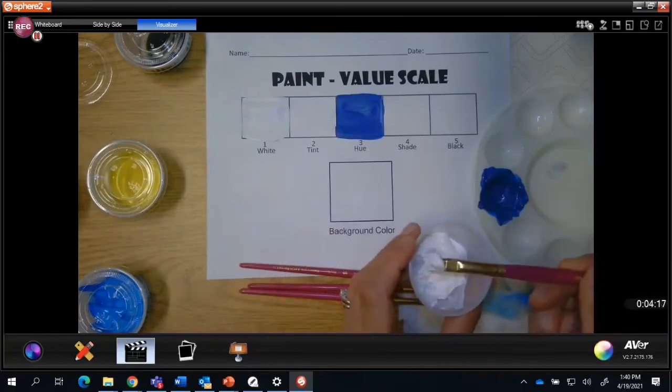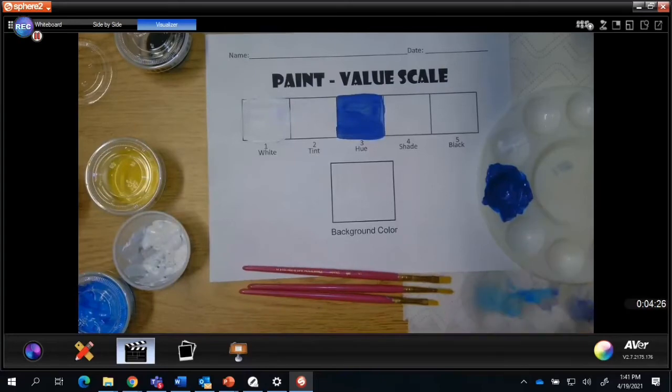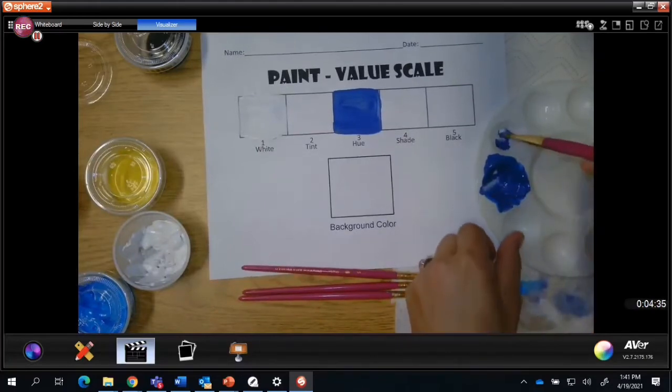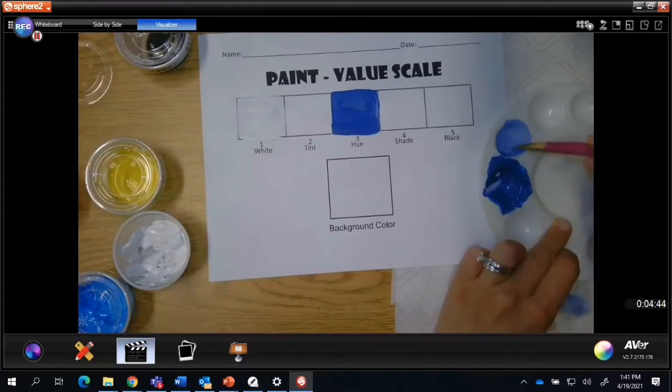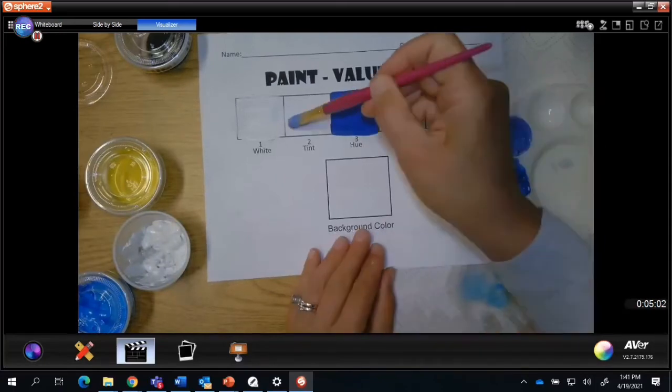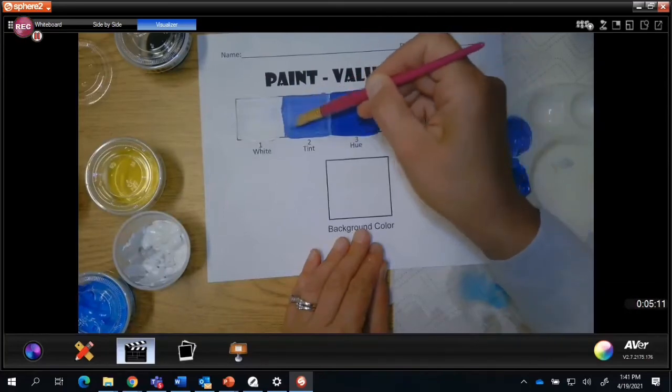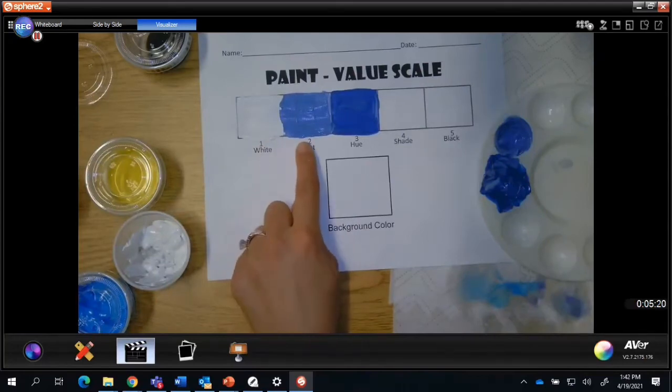What I'm going to do is take some white. You always start with your lighter color first. I'm going to put that into the well next to my blue violet color. I'm going to wash my brush off, dry it, and then add small amounts of my number three value until I get this about halfway. I want it to be about halfway between the one and the three. There's still a good amount of contrast between my one, my two, and my three.